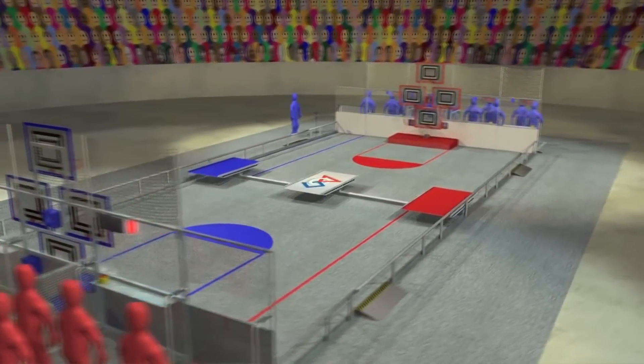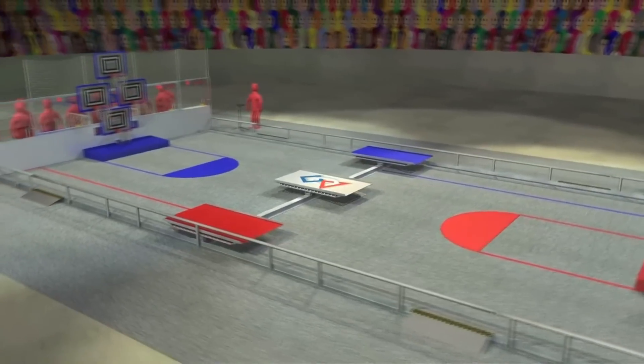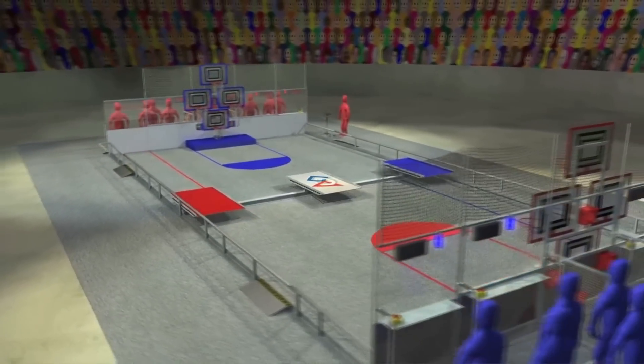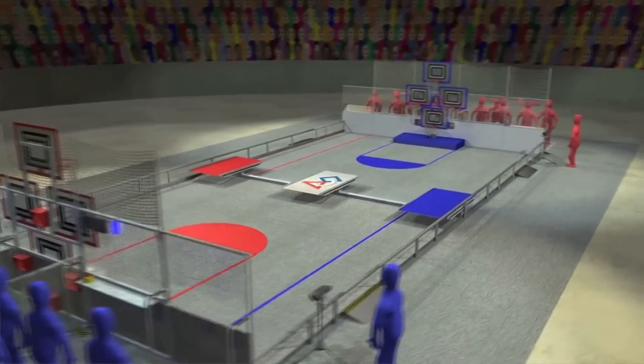Alliances of three teams each operate their robots from behind alliance walls at the ends of the court. Four scoring hoops are located in each alliance wall, positioned at three different heights.